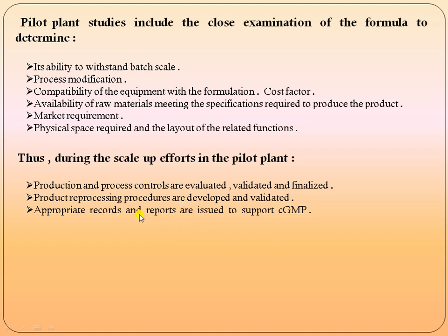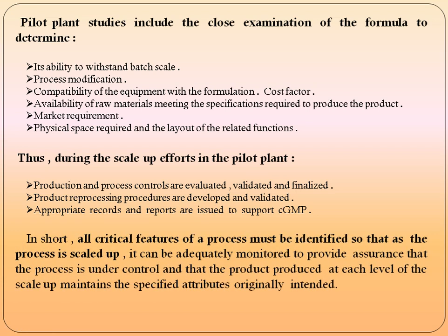Appropriate records and reports are issued to support cGMP. All critical features of the process must be identified so that as the process is scaled up, it can be adequately monitored to provide assurance that the process is under control and the product produced at each level of scale-up maintains the specific attributes originally intended. There should not be any change in quality attributes during large-scale production.